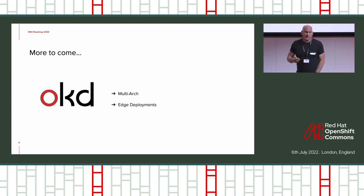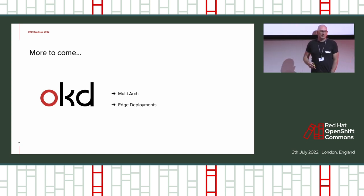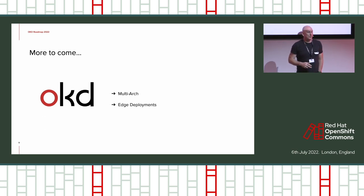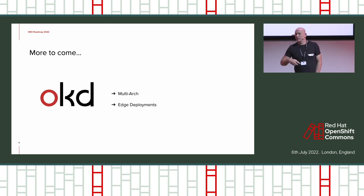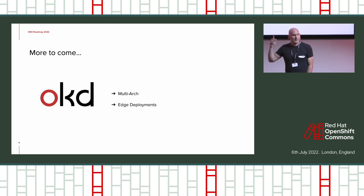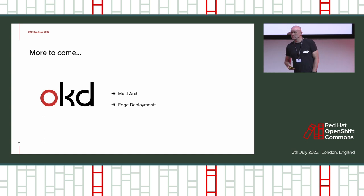Some other things coming up: multi-architecture. The new build system is going to be multi-architecture enabled, and there's work going on to do ARM builds and other builds for OKD. There's also quite a lot of work going on within Red Hat, as we heard in the OCP roadmap, on doing smaller deployments closer to the edge.